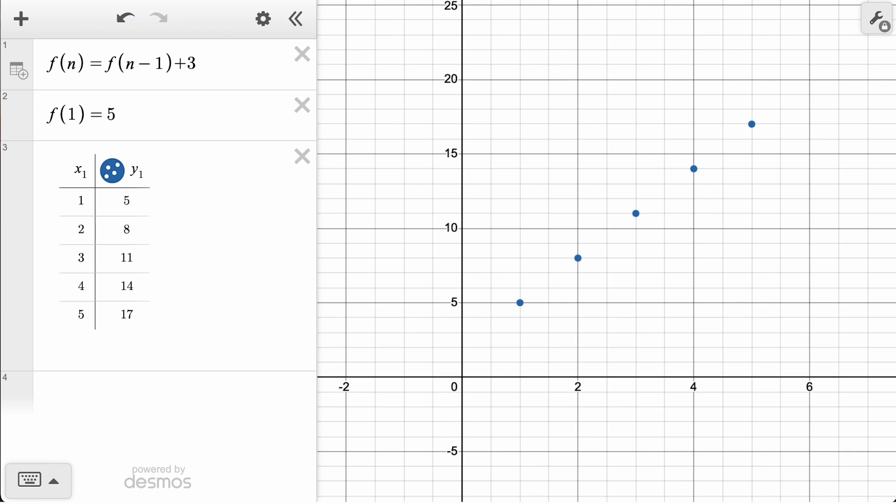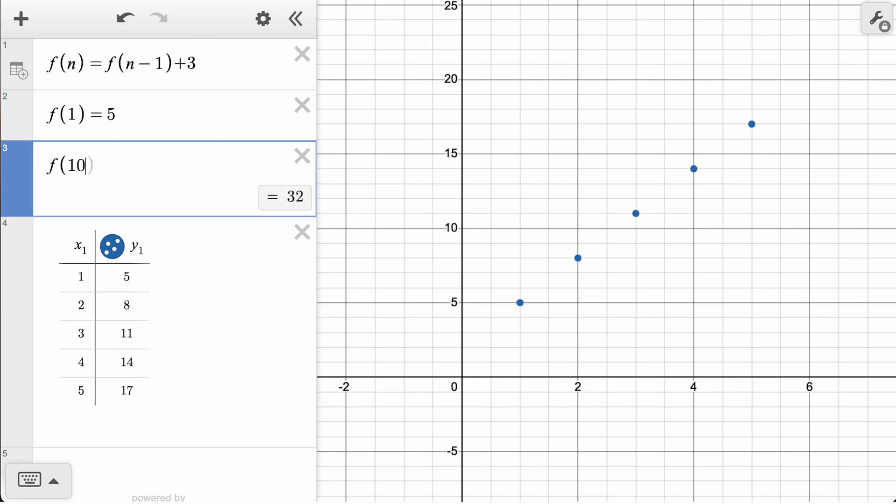Let's try calculating the future terms in the sequence using function notation. By typing f(10), we see the 10th term is 32, and typing f(100) shows us the 100th term is 302.